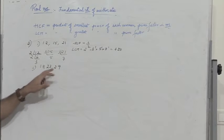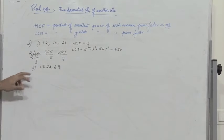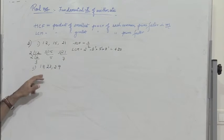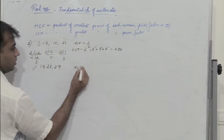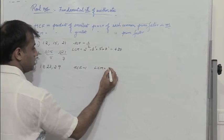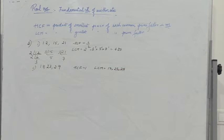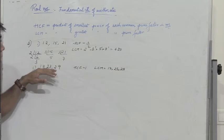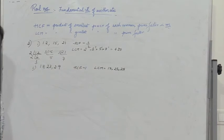The next problem: 17, 23, and 29. We observe that these three numbers are all prime numbers. The only factors of each are 1 and themselves, so the common divisor is 1. HCF = 1. For LCM of prime numbers, it is simply the product of those primes. So LCM = 17 × 23 × 29. Whenever two or more numbers are all prime, HCF = 1 and LCM = their product.